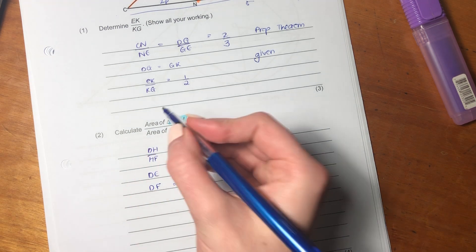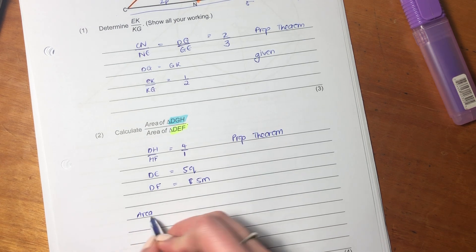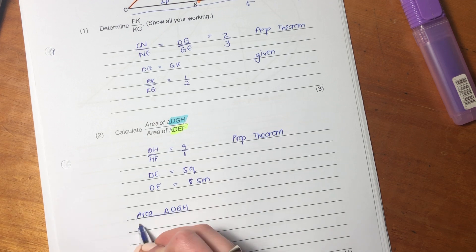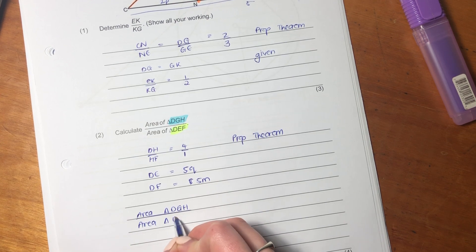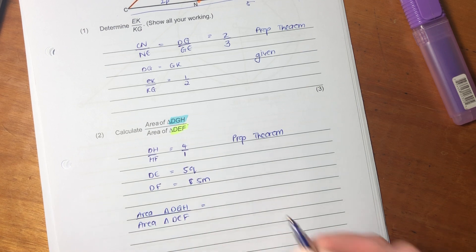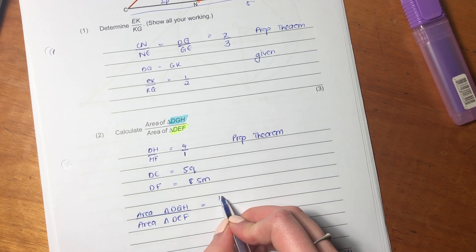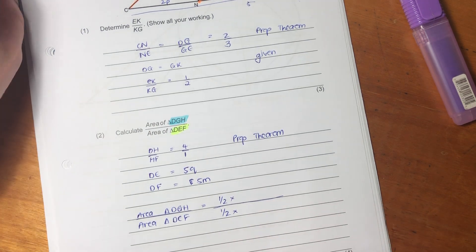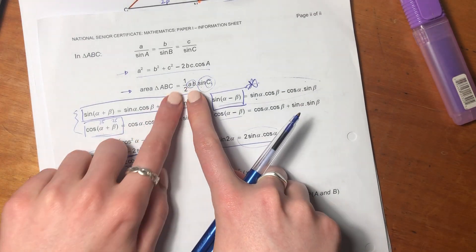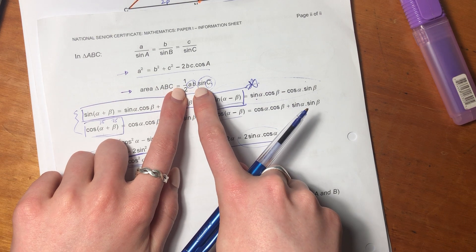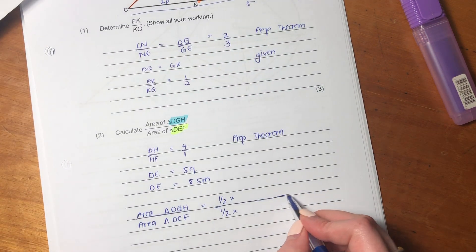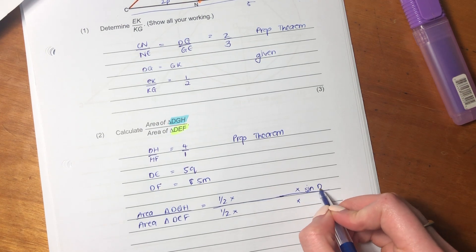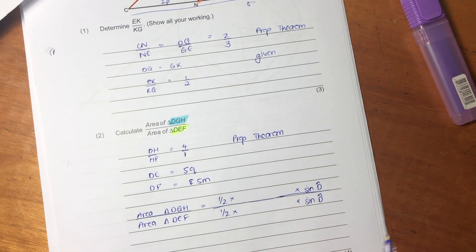Now, we're going to do area of triangle DGH over area of triangle DEF. So what we're going to do is we're going to say a half, because both of them have a half, which is going to cancel, because we are using this formula, which is half AB times sine C. So I'm just going to put the sine part in, because both of them have sine angle D.